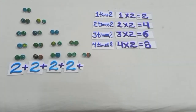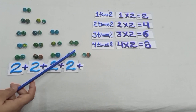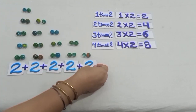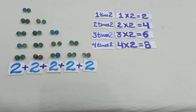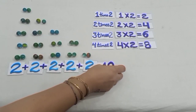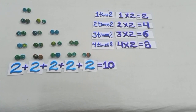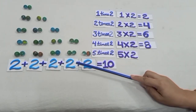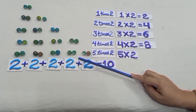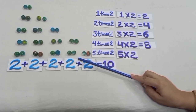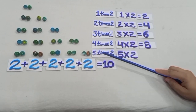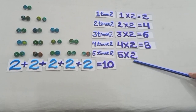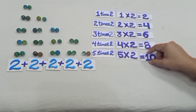Earlier we had 8 marbles and now 2 marbles more, so we have 10 marbles. You can see we have 5 groups with 2 marbles in each group. That means we have 5 times 2, and we write it as 5 into 2, that is equal to 10.